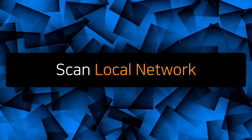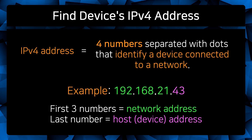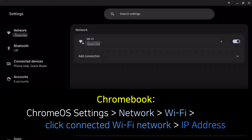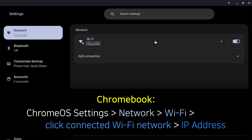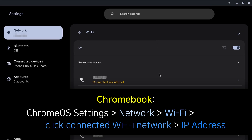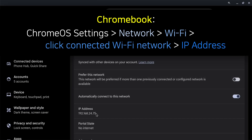Next, I'm going to show how to scan your local network. To do that, we first need to know our device's IP address — more specifically, the IPv4 address. An IPv4 address has four numbers separated by dots, and these IP addresses typically start with 192.168. The first three numbers represent the network address, and the last number represents the device's address. To find the IP address of a Chromebook, we can open Chromebook settings, click on Network from the list on the left, then click on Wi-Fi, click on the connected Wi-Fi network, and from here we can see the IP address.